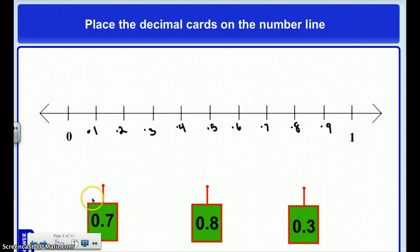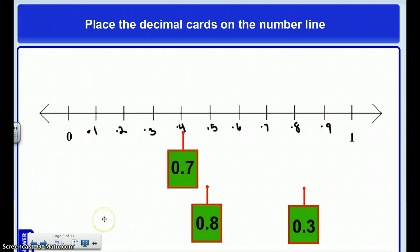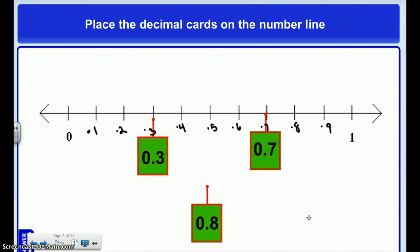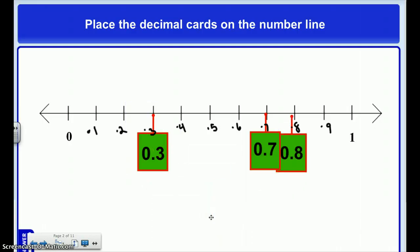Then I can place these decimals on the number line. 7 tenths would go right here, 3 tenths would go here, and 8 tenths would go here. Remember, always number and label your number line before you start figuring out where things go.